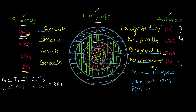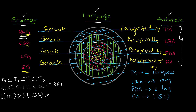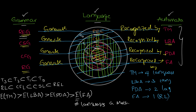So we can say that a Turing machine can recognize four languages, a linear bounded automata can recognize three languages, a pushdown automata can recognize two languages, and a finite automata can recognize one language — which is the regular language. Therefore, the expressive power of Turing machine is greater than linear bounded automata, which is greater than pushdown automata, which is greater than finite automata.